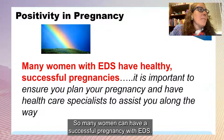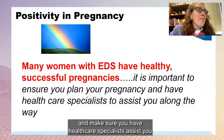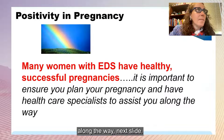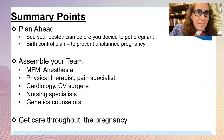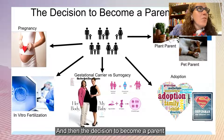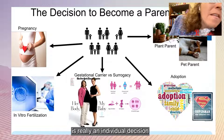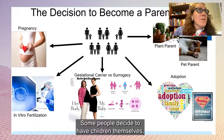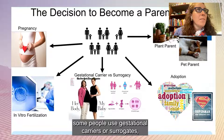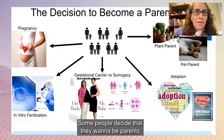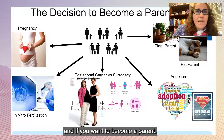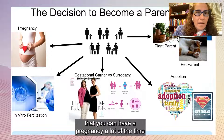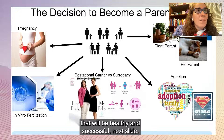Many women can have a successful pregnancy with EDS. It's important to have your plan and make sure you have healthcare specialists to assist you along the way. The summary points are: plan ahead, assemble your team, and then use your tools to get through the pregnancy. The decision to become a parent is really an individual decision, and there are so many ways to get there. Some people decide to have children themselves; some use gestational carriers or surrogates; some do adoption; some decide to parent pets or plants. It is your decision of how you want to become a parent and if you want to become a parent. We want to give people hope that you can have a healthy and successful pregnancy most of the time.